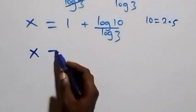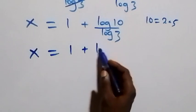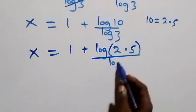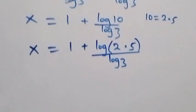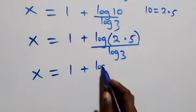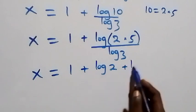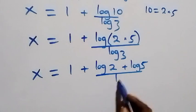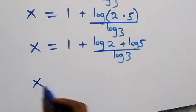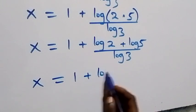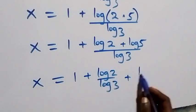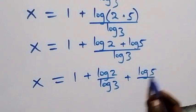What we have becomes x equals 1 plus log of (2 times 5), over log 3. Again following the law of logarithms, this becomes x equals 1 plus log 2 plus log 5, over log 3. We then separate this into two fractions: x equals 1 plus log 2 over log 3, plus log 5 over log 3.